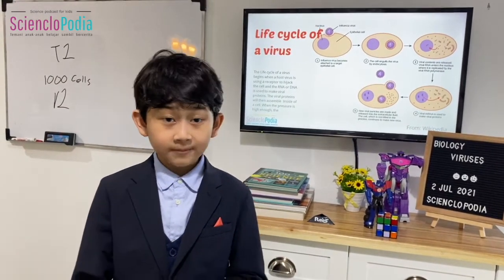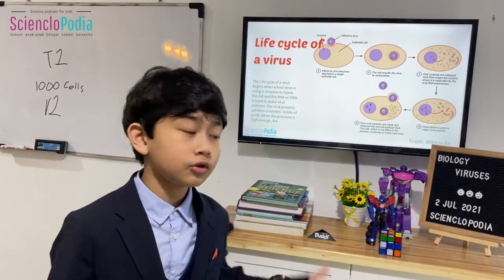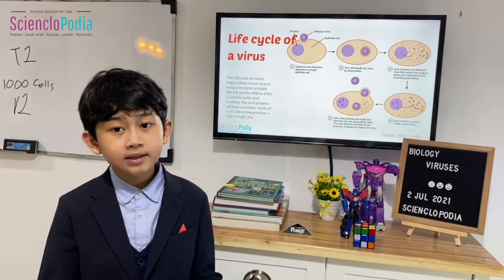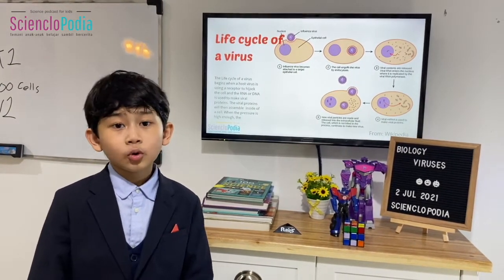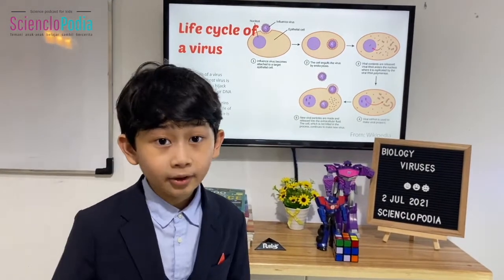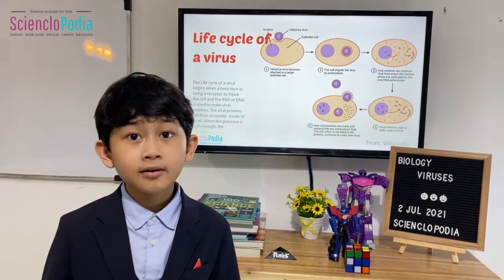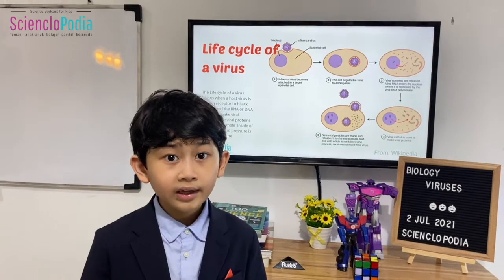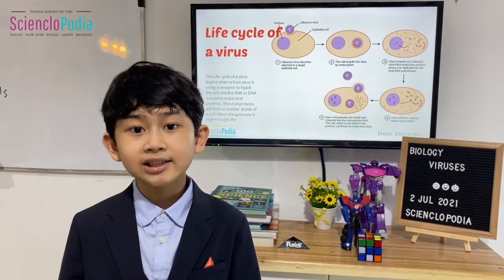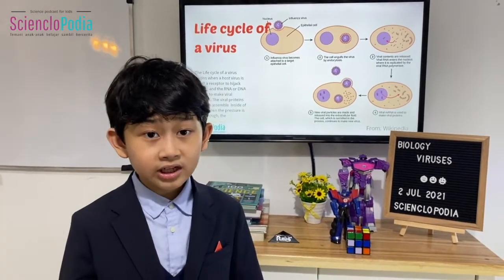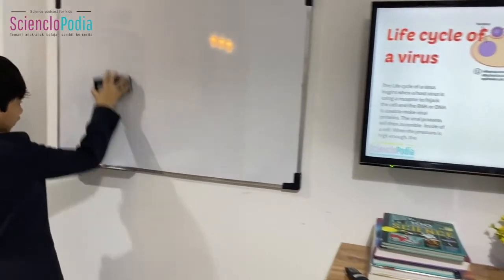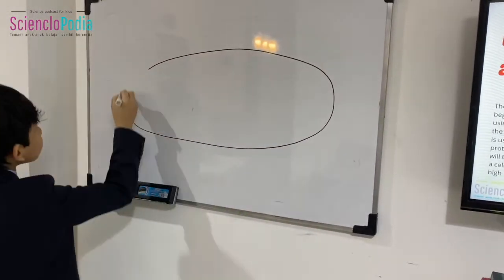Penicillin, made by the fungus, actually killed the bacteria. Fleming shared this discovery with the world and they started using penicillin to kill bacteria. However, this is becoming a problem because bacteria can mutate — just like how COVID mutates, bacteria can also mutate. When bacteria mutate, there's a chance they will become immune to an antibiotic like penicillin.